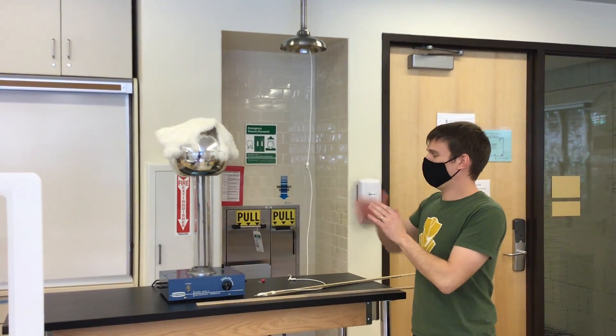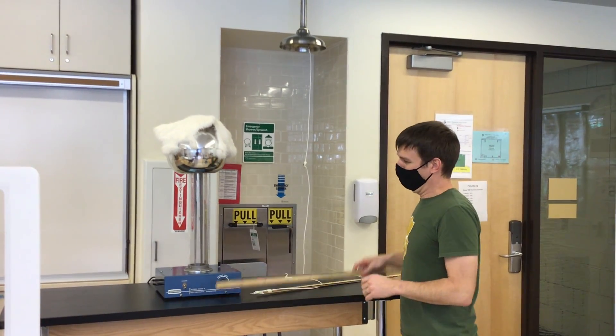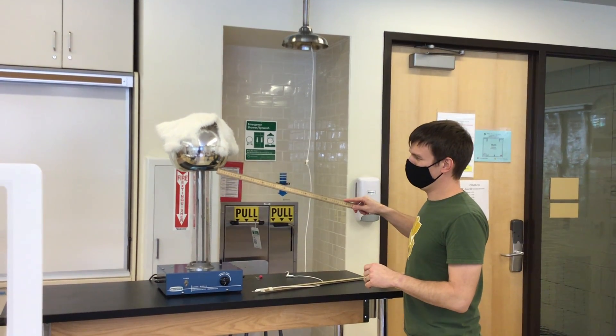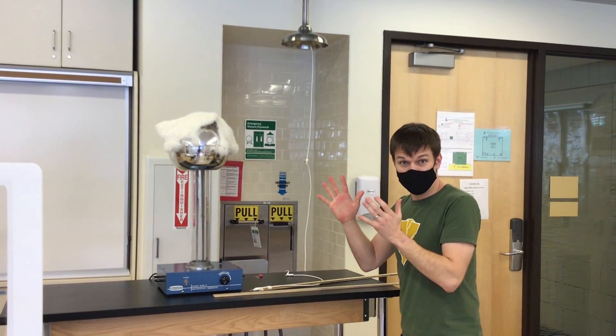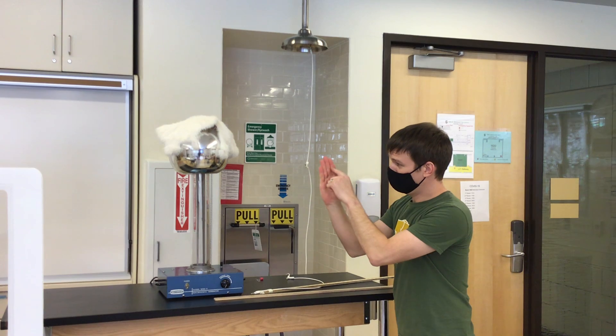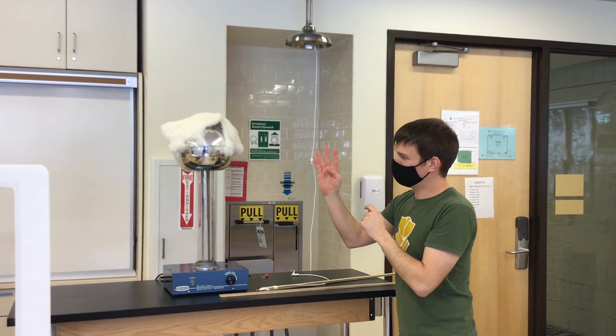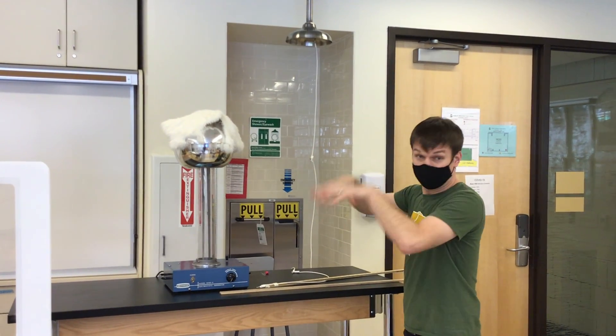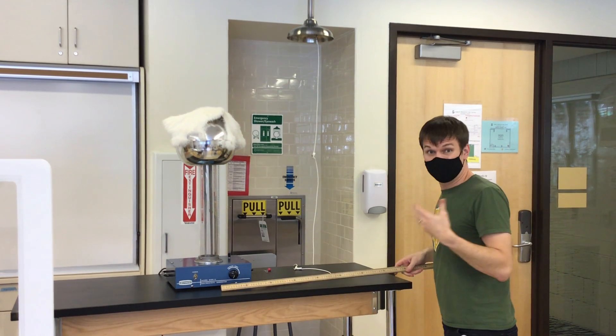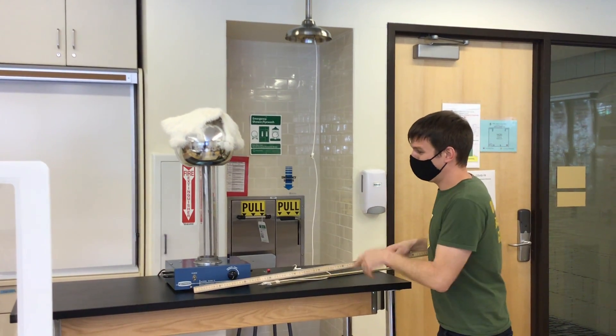All right, so we've got our Van de Graaff generator with rabbit fur on there. Remember, we're going to put extra electrons on here, and those electrons are going to want to get away from one another. This is some of the hair—they're going to want to spread out and get away from each other, so we're going to see the hair stand up. That means there's a lot of extra electrons on there in this case.